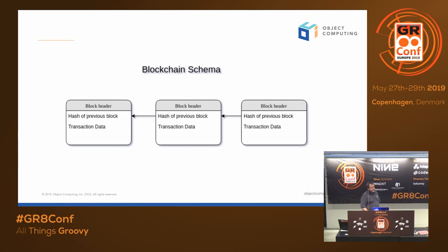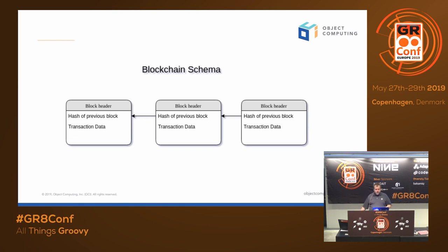There's a schema that blockchain follows. These are the blocks — they have block headers and a hash value pointing to the previous block, and that's what makes it a chain. Each one points backwards, keeps going and going. Eventually the chain will get too long and then they call it a fork and make another chain. That's when you hear people on the news saying Ethereum forked — they do that because the chain is too long, or there's some bug or security hole people are exploiting to steal money.